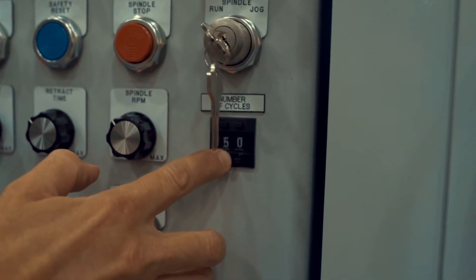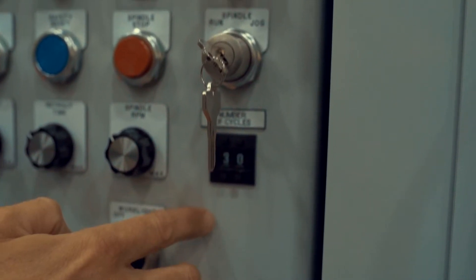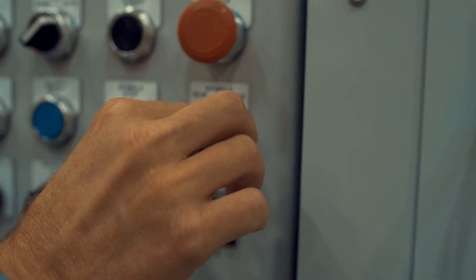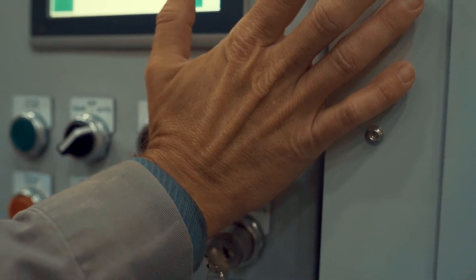Number of cycles can be set by the finger switch as shown here up to a maximum of 99 cycles. The key allows you to go from run to jog mode and the emergency stop button is conveniently located.